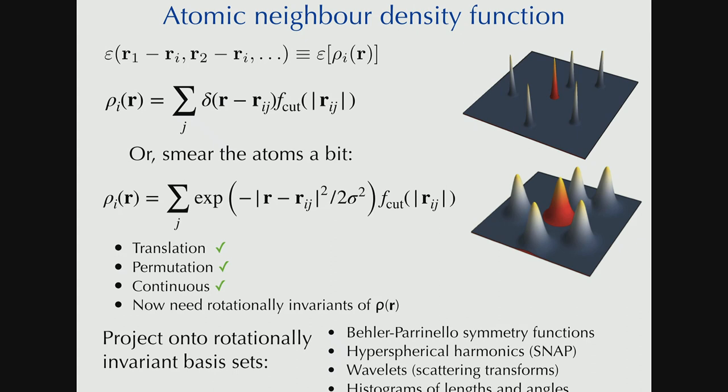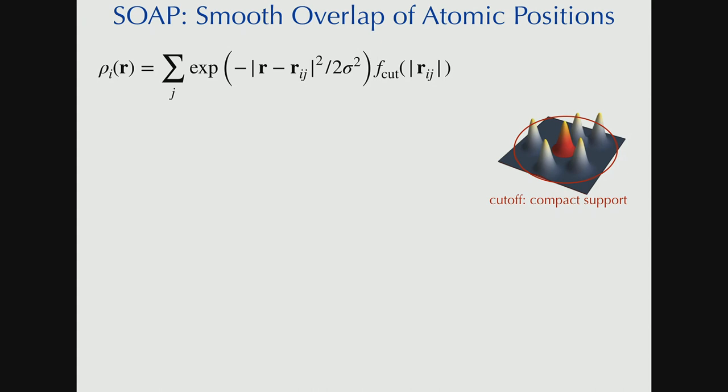So, Behler-Parinello symmetry functions, which were part of the original proposal, can be considered a projection of this neighbor density. And there are many others. You can make histograms of bond lengths and angles within your neighborhood. And that's a projection of this. The next talk, Michele Ceriotti will go into more detail about these connections. But our favorite choice is to take this atomic density and perform, essentially construct a kernel directly.